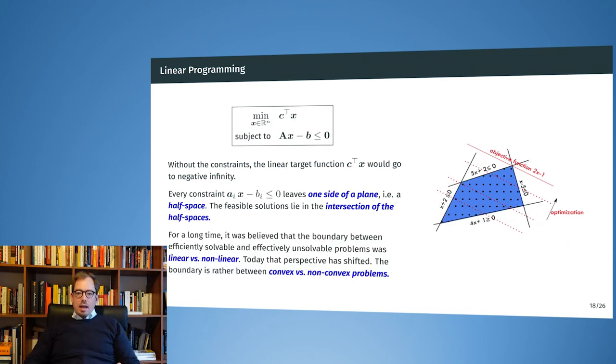For a long time, it was believed that the boundary between efficiently solvable problems and very complicated hard problems was the difference between linear and non-linear. Today, we rather believe that the boundary is between convex versus non-convex problems. Today, we say that the convex problems are efficiently solvable and the non-convex problems are not efficiently solvable. But for many years, until the late 80s even, in many circles, it was believed that only the linear problems were efficiently solvable.